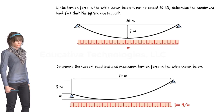Given the support reactions at B, we can easily determine the reaction forces at A using the static equilibrium equations. Suppose we are also asked to come up with an equation for the tension force in the cable. Such an equation can be used to determine the location and magnitude of the maximum tension force that the cable must be able to carry.